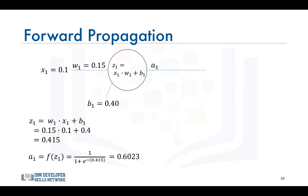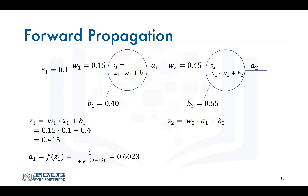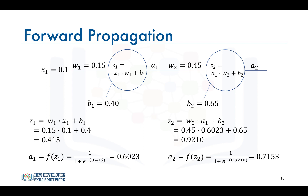For a network with two neurons, the output from the first neuron will be the input to the second neuron. The second neuron takes the input a1 and computes the dot product with weight w2 and adds bias b2. Using a sigmoid function as the activation function, the output of the network would be 0.7153, and this would be the predicted value for the input 0.1. This is in essence how a neural network predicts the output for any given input.